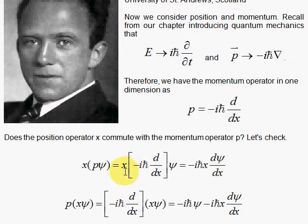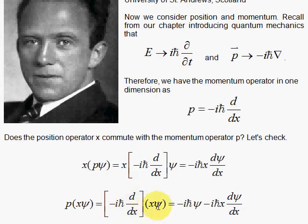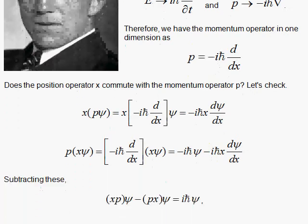Applying p first, we get minus i h-bar x times d/dx on psi. Now suppose we go in the other order — x first, then the derivative. x times psi is simply x psi. The derivative then uses the product rule: we take the derivative of the first, which is 1 times psi, with minus i h-bar, and then minus i h-bar x times the derivative of the second. These two results are not the same, so if we subtract them, we do not get zero.